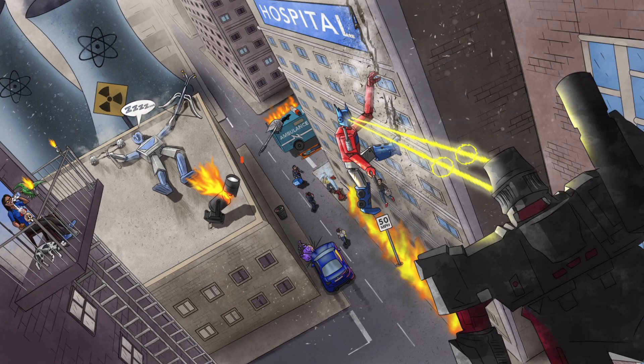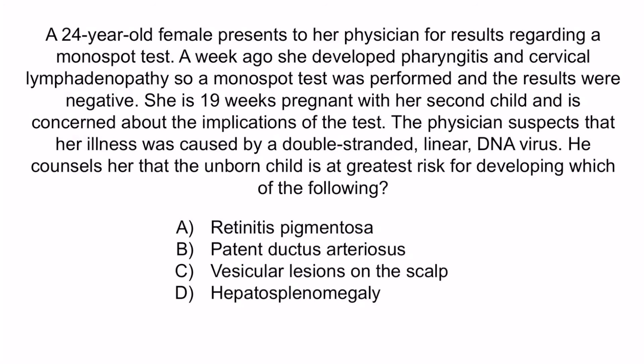From the image, the broken spotlight reminds us the monospot test is negative, and the Dalmatian dog reminds us that congenital CMV can cause hepatosplenomegaly. A is incorrect because congenital CMV causes chorio-retinitis, not retinitis pigmentosa — retinitis pigmentosa is a degenerative disease unrelated to CMV. B refers to congenital rubella, which is a single-stranded RNA virus, not double-stranded DNA. C refers to congenital HSV, which would present with a painful vesicular rash on the genitals in the mother, not pharyngitis and cervical lymphadenopathy. The correct answer is D, hepatosplenomegaly. That covers everything you need to know regarding CMV.